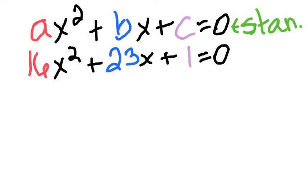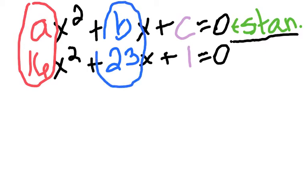This is our second example on how to identify the coefficients or the letters in our quadratic equations. So if you look at our top one you can see that it is written in standard form which is Ax squared plus Bx plus C equals zero. And now we have our equation below that which is 16x squared plus 23x plus 1 equals zero. So we are going to draw our circles. So I have the red circle over the A and the 16. I have the blue circle around B and 23 and I have my purple circle around C and 1.